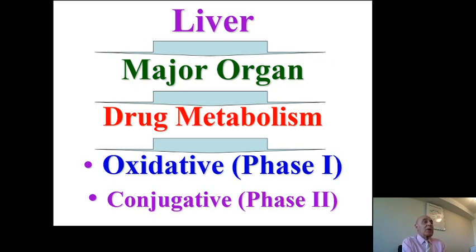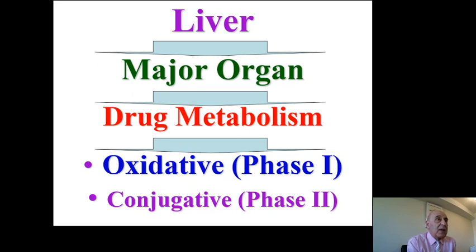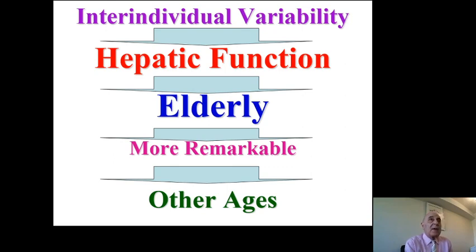The liver is the major organ for drug metabolism, with two phases: phase one is oxidative metabolism, and phase two is conjugative metabolism — drugs are oxidized and then the metabolite is conjugated to glucuronic acid. There is interindividual variability in hepatic function, particularly in the elderly, and this variation is more remarkable than in other age groups.